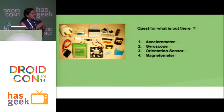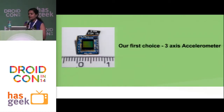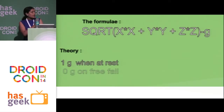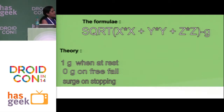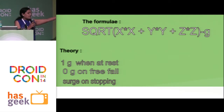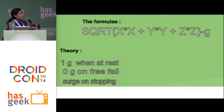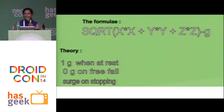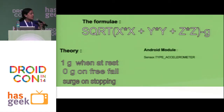What we started by doing was we started by using the accelerometer. We were like, how hard can it be to detect phone fall? There are certain principles of gravity and certain principles of fall. When an object is at rest, it's like 1G. And when it's in free fall, it's 0G. And there'll be a surge on stopping. So we just started with that and started by using the formula for accelerometer and subtracting the gravitational pull. We thought it was very simple and we'd be finishing it in a few days.